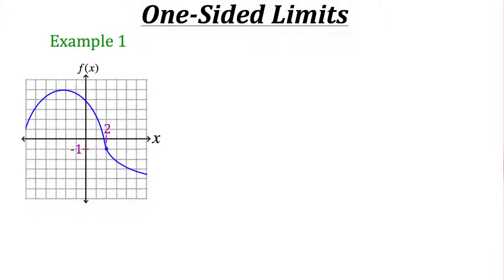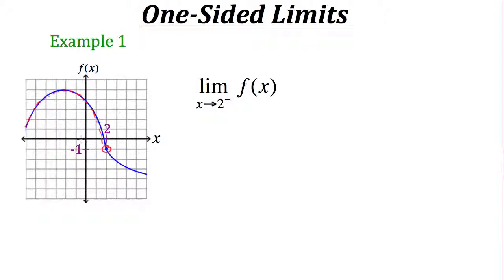Here we have a graph of our function f. We want to find the limit of our function as x approaches 2 from the left, which is signified by a negative sign, meaning that we're coming from the negative x-axis direction. Tracing our function from the negative x-axis toward x equals 2, we approach a value of negative 1.